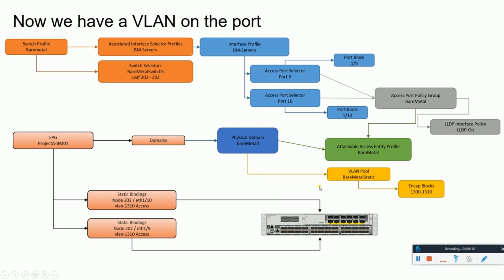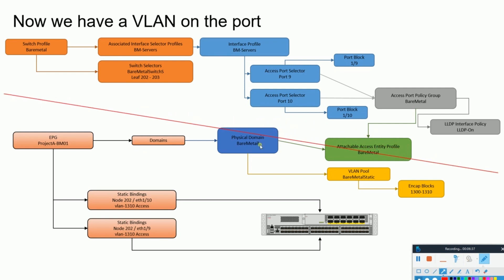This is how the EPG defines where to put the VLAN from the pool and the associated domains. Combining all of it together: the upper half represents the physical topology or physical configuration of ACI, and just below that line, the lower part represents the logical configuration of ACI. Using this complete configuration — defining the domains, the VLAN pools, the ports, and then mentioning the ports and domains within an EPG — the complete end-to-end configuration works.